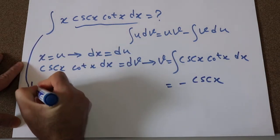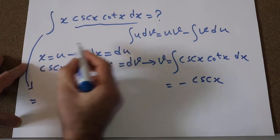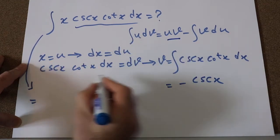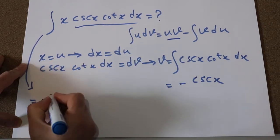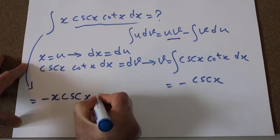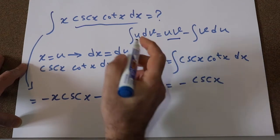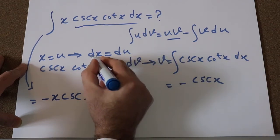So you can rewrite this integral as uv. u is x, v is minus cosecant x, therefore uv will be equal to minus x cosecant x minus integral of v du, and du is equal to dx.